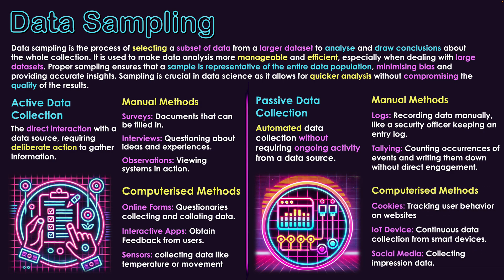Moving to computerized passive methods — these are things you may well be aware of. First is cookies, which track your user behavior on a website. You know cookies are active because you usually have to accept them, but once accepted, you don't really know what they're actually doing. You're not doing anything active to support the cookies' data collection — you're just using the website like normal and it's gathering your data.